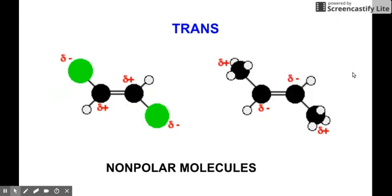While a trans, you have what we call the cancellation of the charges or the cancellation of the distribution of the electrons. If one side will be more negative, it will be balanced out by the side which will have more on positive side. So with this particular arrangement, your polarity gets canceled out. So you will have what we call a non-polar molecule in a trans arrangement of your atoms.